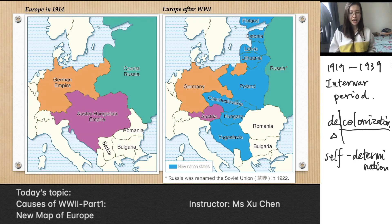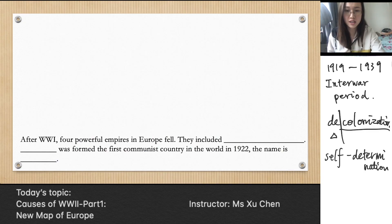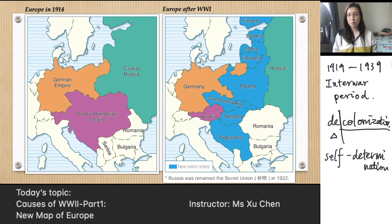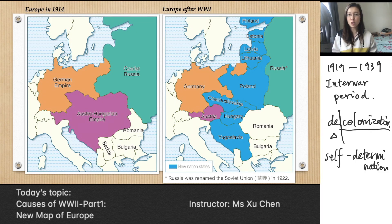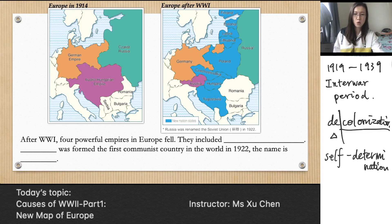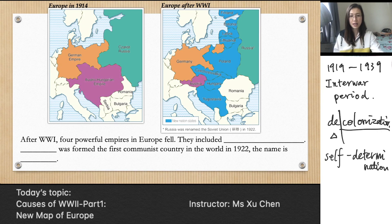Based on this idea and Wilson's Fourteen Points, so many new nation-states were able to form. Now let's see the relationship between the new map and the old map to understand how these countries were formed. After the First World War, four powerful empires in Europe fell: the German Empire, Tsarist Russia, the Austro-Hungarian Empire, and the Ottoman Empire.